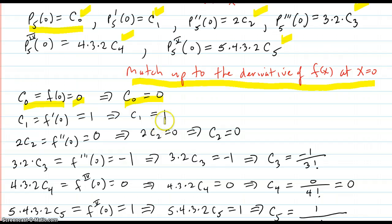And all the other ones are like that. c one, that's this one. p prime has to match up with f prime. So that's one. So c one is one. p double prime, which is two c two, has to match up with f double prime at zero, which is zero. And that implies two c two equals zero. That implies c two equals zero.